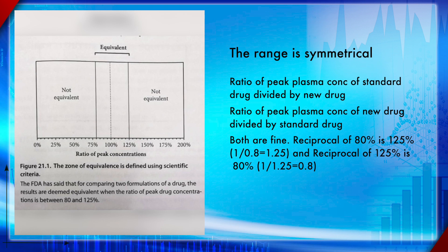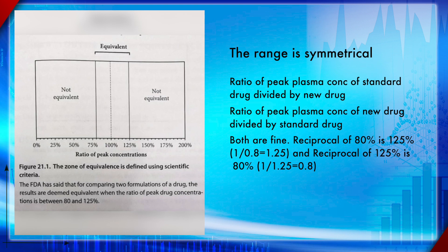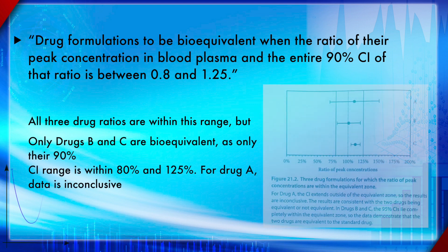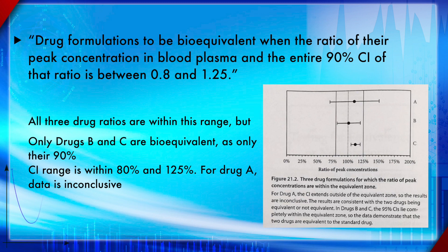Looking at drug candidates D, E, and F — none are bioequivalent because none have their 90% confidence intervals completely within the equivalency range. Notably, drug F's confidence interval is entirely outside the equivalency box, so we can clearly state it is non-equivalent, while the others are in an ambiguous or partially equivalent situation where no valid conclusion can be made.